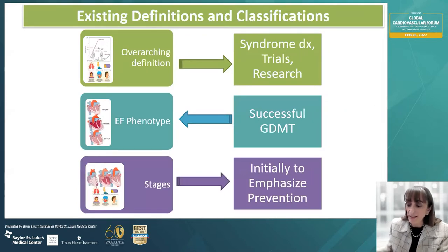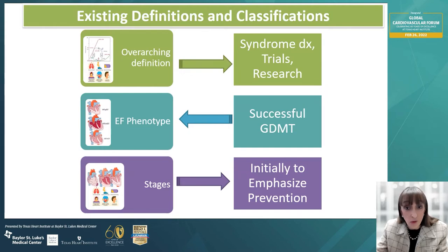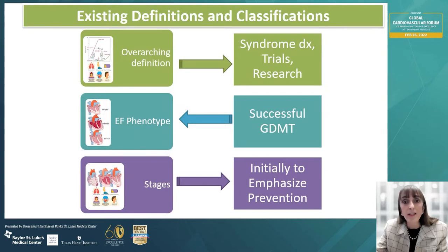If we examine the existing definitions and classifications of heart failure across the spectrum, there are usually three categories. The first is the definition of the syndrome, which usually relies on symptoms and signs, critically important for clinicians and researchers. The second has traditionally been the ejection fraction phenotypic classification, important for targeting guideline-directed therapies. The third classification has been stages of heart failure, important for prognostication, appropriate referral of patients, and communicating prognosis to patients and referring clinicians.